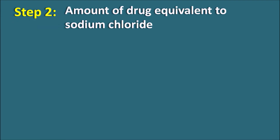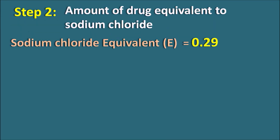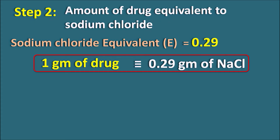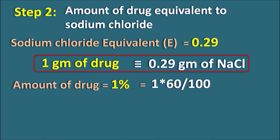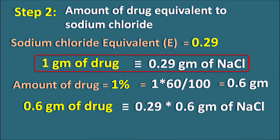Step 2 — amount of drug equivalent to Sodium Chloride. The Sodium Chloride Equivalent E is 0.29, meaning 1 gram of drug is equivalent to 0.29 grams of Sodium Chloride. The amount of drug present in the solution is 1% in 60 ml, which equals 1 × 60/100 = 0.6 grams. Therefore, 0.6 grams of drug is equivalent to 0.29 × 0.6 = 0.174 grams of Sodium Chloride.